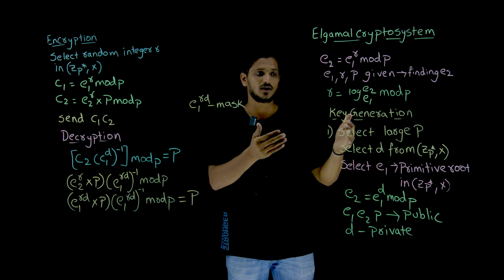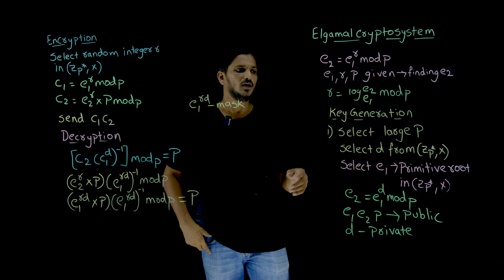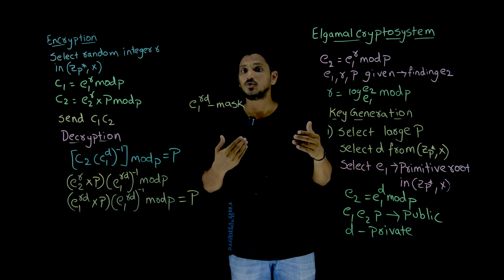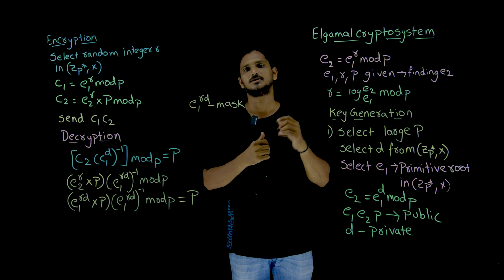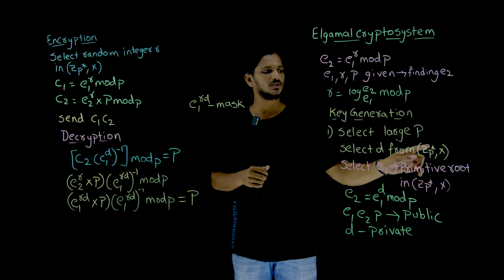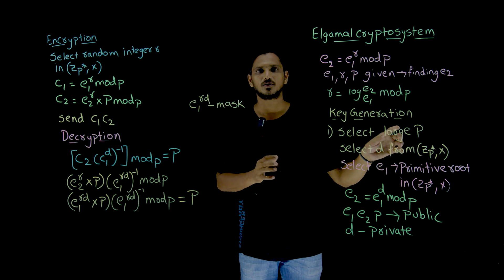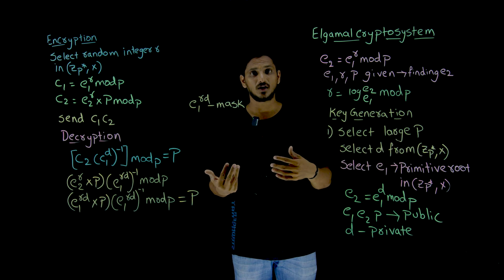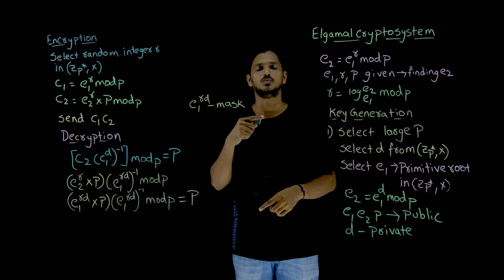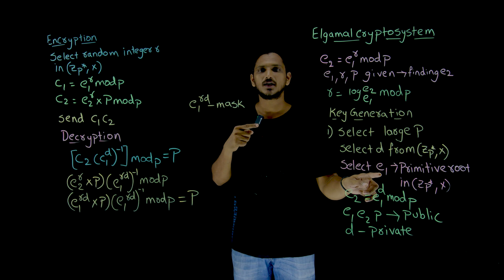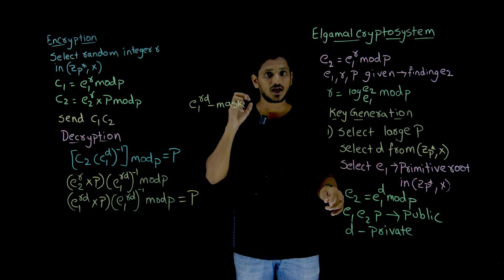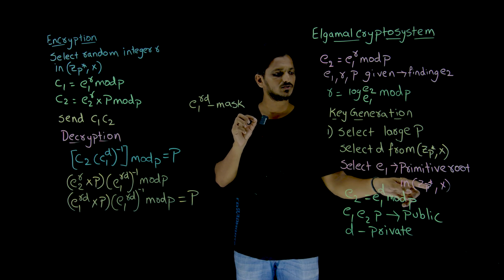Now let's understand how keys are generated in this cryptosystem. First, we need to select a large prime number — it should contain at least 1024 bits, meaning at least 300 digits. From this prime number, we generate a group Z_p* with multiplication. From this group, we randomly generate a value d, and also generate a primitive root, which we call e1.